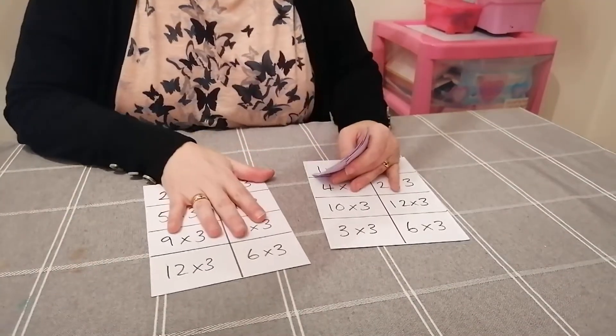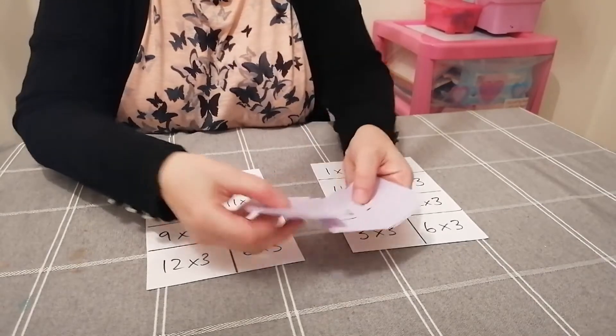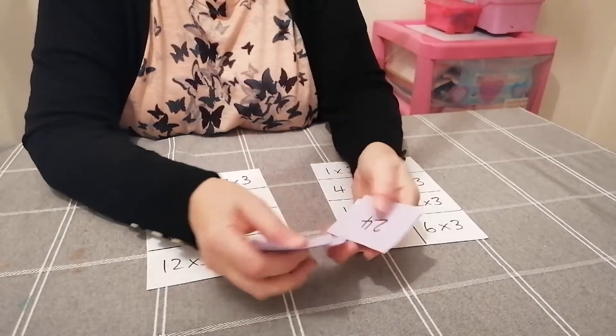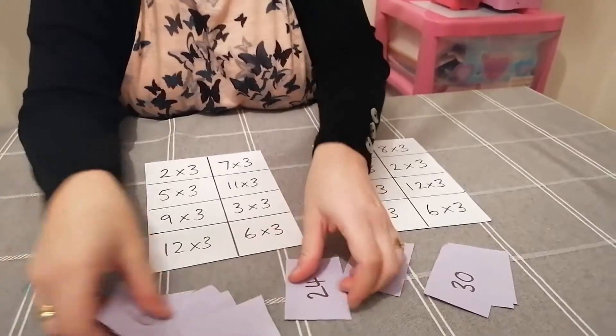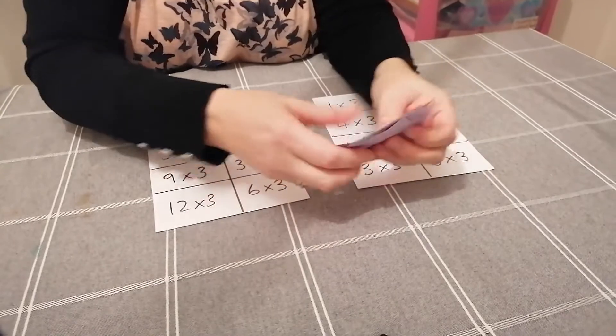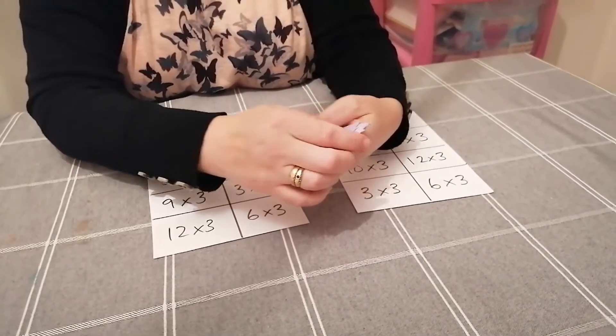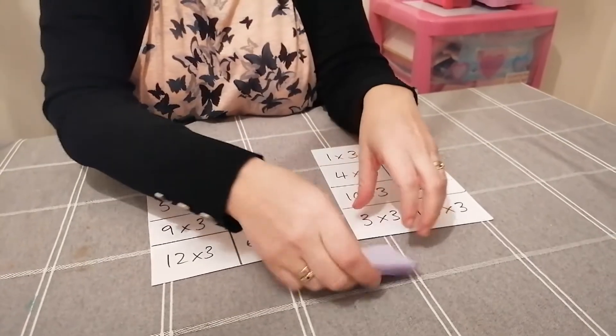So when we've got the two bingo cards made ready and we've got all our answers, we need to mix those up. Just make sure that they are mixed, muddled. And when you've mixed them all up and you're happy, we're going to turn them face down.